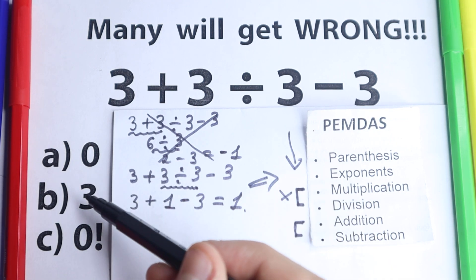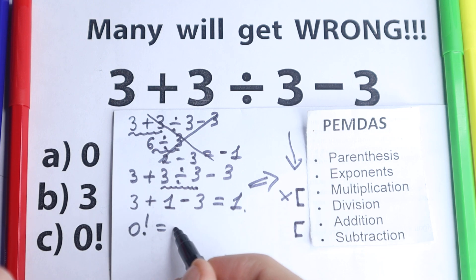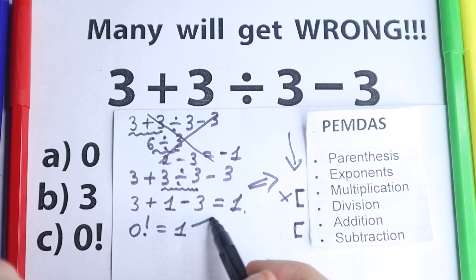As I told before, no A, no B. But what about C? We have zero factorial. Let's really remember or learn that zero factorial equals 1. We need to know this from school. So zero factorial equals 1, which is absolutely the same as right here.